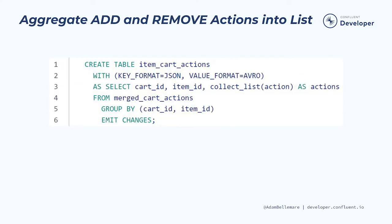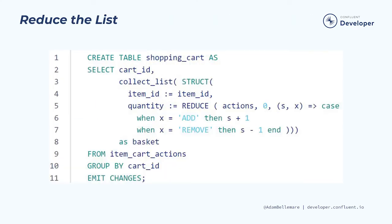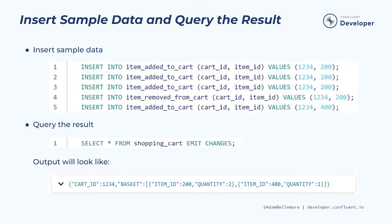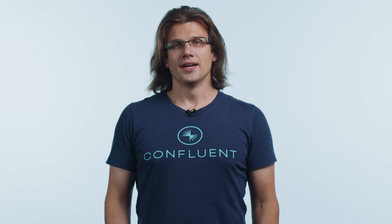In the next step, you will create a table of cart and item tuples and aggregate the adds and the remove actions into a list. You will finish up by reducing the list down to a numeric quantity, while grouping the items and the final quantity together into a single struct. Together, you get a single row representing the current cart ID and every item and quantity within the cart.